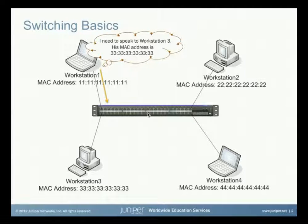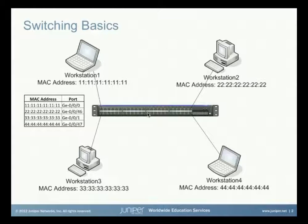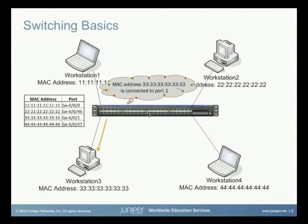The switch itself has a very special table in its memory called a MAC address table. And from this, it can tell which MAC addresses are accessible through which ports. So in this case, it can tell that the MAC address for Workstation 3 is accessible through port number 1.